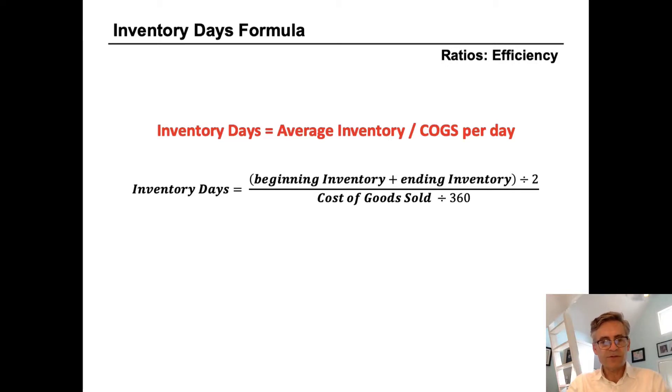And average inventory is simply the beginning inventory plus the ending inventory divided by two. And COGS per day in the denominator is just cost of goods sold divided by 360 days.